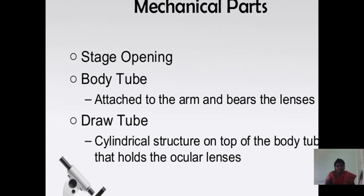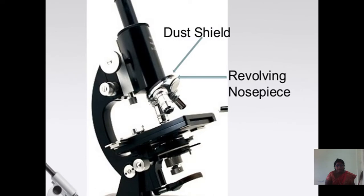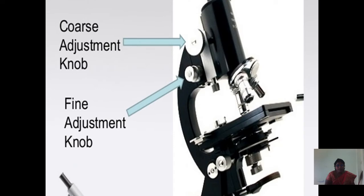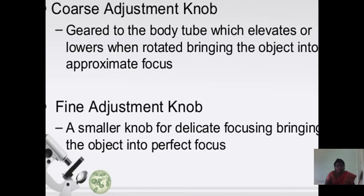The body tube is attached to the arm and bears the lenses. The draw tube is the cylindrical structure on top of the body tube that holds the ocular lenses. The revolving or rotating nosepiece is a rotating disc where the objectives are attached. The dust shield lies atop the nosepiece and keeps dust from settling on the objectives. The coarse adjustment knob is geared to the body tube, elevating or lowering it when rotated to bring the object into approximate focus. The fine adjustment knob is a smaller knob for delicate focusing, bringing the object into perfect focus.